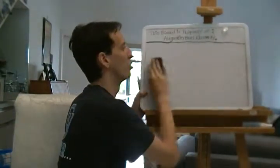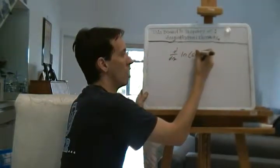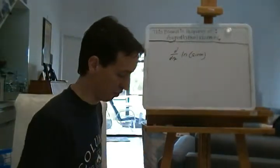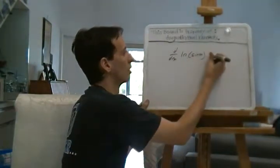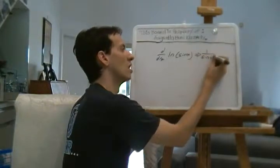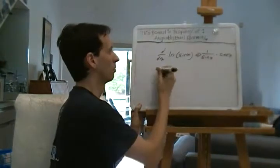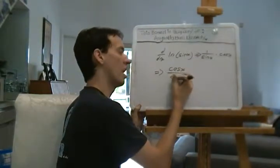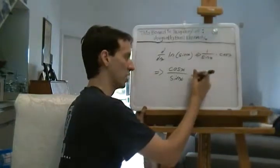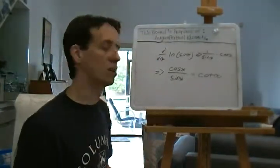Let's do one very quick example. Find the derivative of the natural log of sin x. Chain rule — you see it right off the bat. Natural logarithm is the outer function; sine x is the inner function. The derivative of the outer is 1 over the inner — 1 over sine x — times the derivative of that, which is cosine x. So we have cosine x over sine x, which is just the cotangent of x. The derivative of the natural log of sine function is cotangent. Interesting.